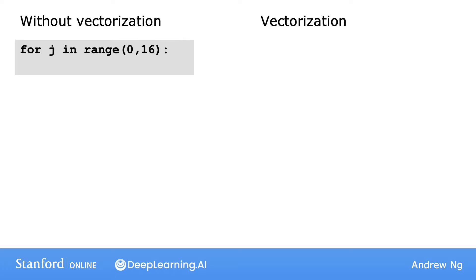Let's look at this for loop. A for loop like this runs without vectorization. So if j ranges from 0 to, say, 15, this piece of code performs operations one after another.